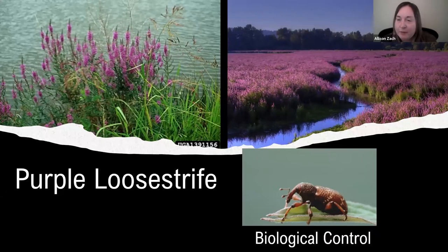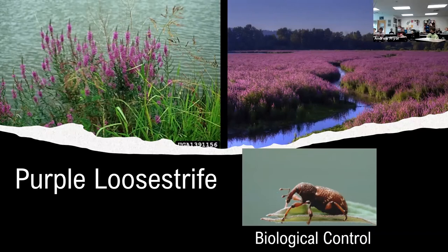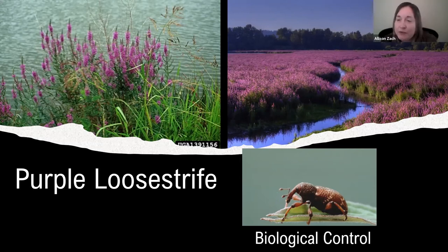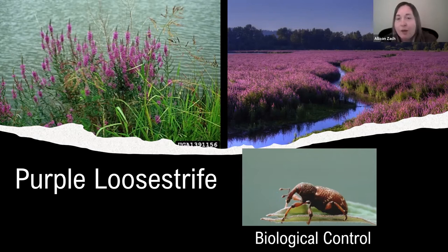This is purple loosestrife, an invasive plant. We have this in our wetlands and by our rivers. If you ever go to a wetland or by a pond and see a purple plant, it could be this. Purple loosestrife was brought over from Asia because it's pretty and hard to kill, but when it gets in a wetland it takes over everything. Having one plant dominate is a problem because animals like geese, ducks, and turtles need diversity — different food sources — and if there's all one plant, those animals can't persist.